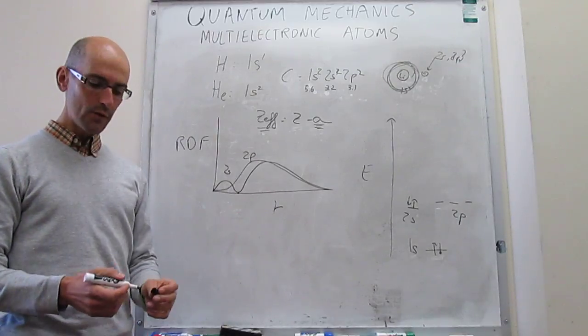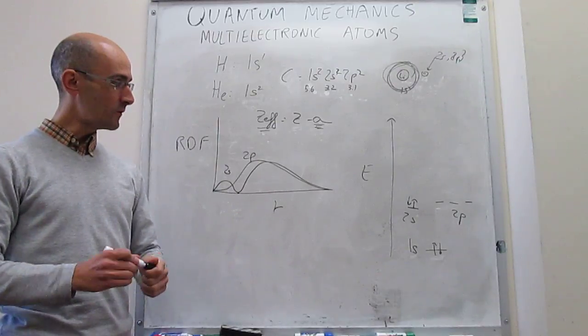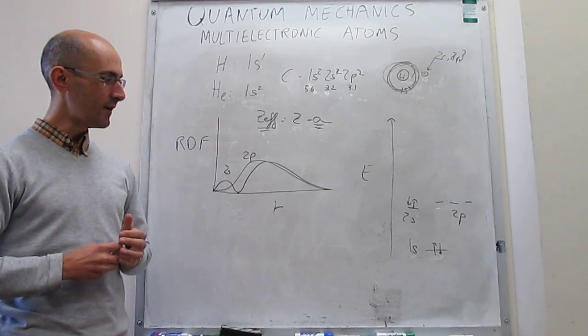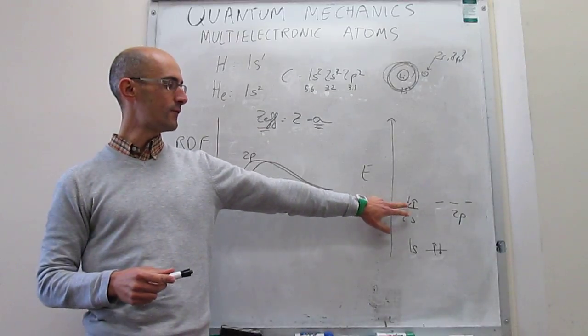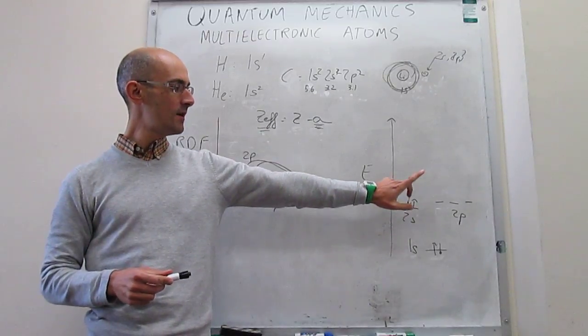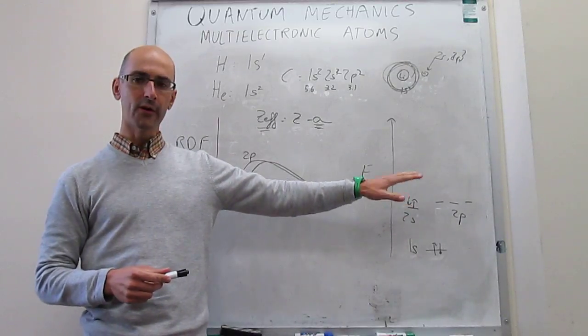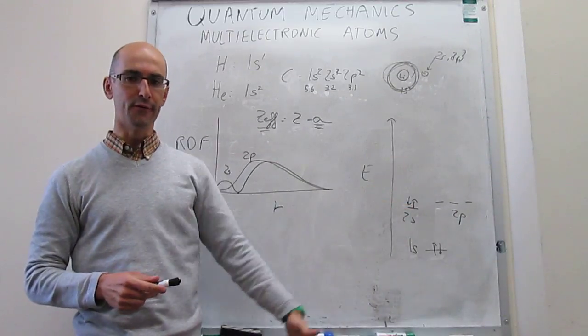In the next video, we're going to continue down the periodic table and write explicit electronic configurations for beryllium, boron, carbon, and so forth.